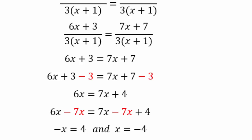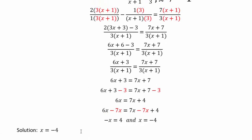So our solution is x equals negative 4. This is important: if you solve an equation of this form and you end up with x equals negative 1, you would have to say no solution, because x equals negative 1 causes zero in the denominator. In this case we got x equals negative 4, which is a solution — but you can always check it. Plug the value into the original equation to verify, because you should never get equations wrong when you can always check.